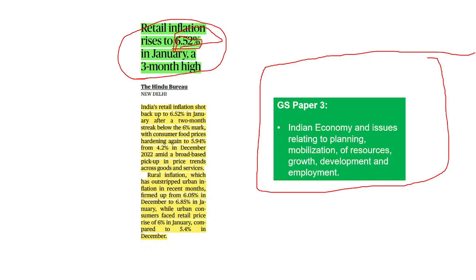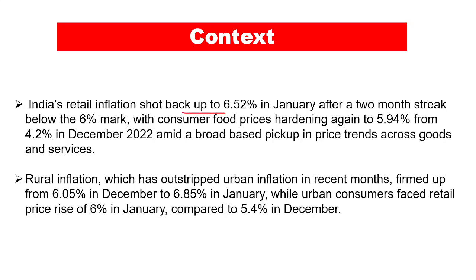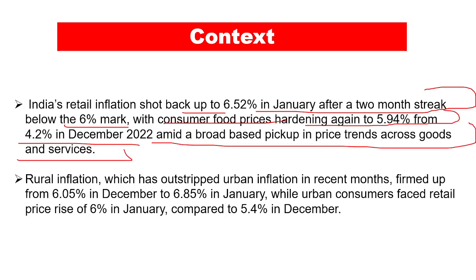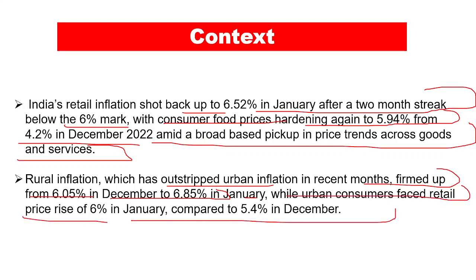Changes in the repo rate will lead to a decrease or increase in inflation, and the work of the Reserve Bank of India is to lower inflation. India's retail inflation shot back up to 6.52 percent in January after a two-month streak below the 6 percent mark, with consumer food prices hardening again to 5.94 percent from 4.2 percent in December 2022, amid a broad-based pickup in price trends across goods and services. Rural inflation outstripped urban inflation, jumping from 6.05 percent in December to 6.85 percent in January, while urban consumers faced a retail price rise of 6 percent in January compared to 5.4 percent in December.